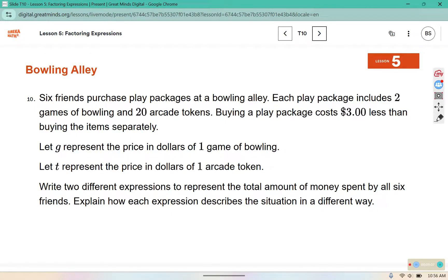6 friends purchase play packages at a bowling alley. Each play package includes 2 games of bowling and 20 arcade tokens. Buying a play package costs $3 less than buying the items separately. Let g represent the price in dollars of 1 game of bowling. Let t represent the price of 1 arcade token. Write 2 different expressions for the total amount of money for 6 friends. So they got 2 games of bowling, which would be 2g, and they got 20 arcade tokens, so 20t. But it's $3 less than buying them separately, so we save $3. This is for 6 friends.